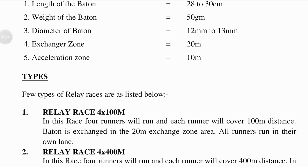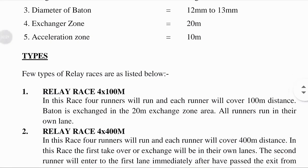The diameter of the baton is a unit of linear measurement of the short stick or tube passed from runner to runner in a relay race, and it is equal to 12 to 13 millimeters.